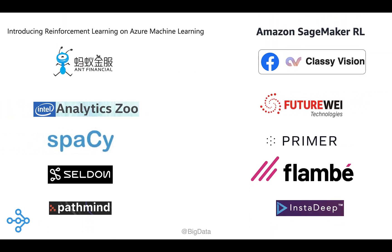Here's a partial list of companies that are already using Ray's collection of libraries alongside other ML platform components. This list includes internal ML platforms, as well as machine learning platforms that enterprises can use and license. ML platform builders love Ray because, unlike monolithic platforms, users have the flexibility to use one or more of the existing Ray libraries or to use Ray to build their own libraries.